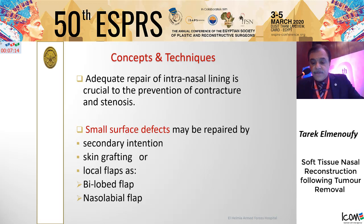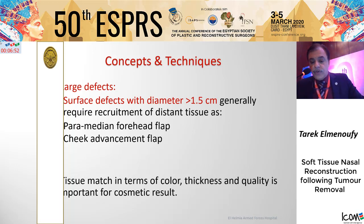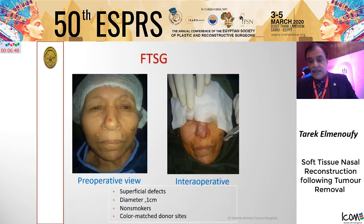For small defects, they can be repaired either by secondary intention, skin grafting, or local flaps such as the bi-lobed flap or nasolabial flap. For larger defects more than one and a half centimeters in diameter, we can generally recruit tissue from distant sources such as the paramedian forehead flap, labial flap or cheek advancement flap. Tissue match in terms of color, thickness and quality is important for cosmetic results.